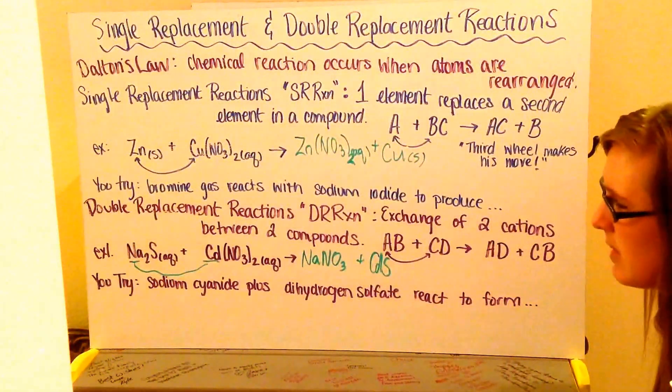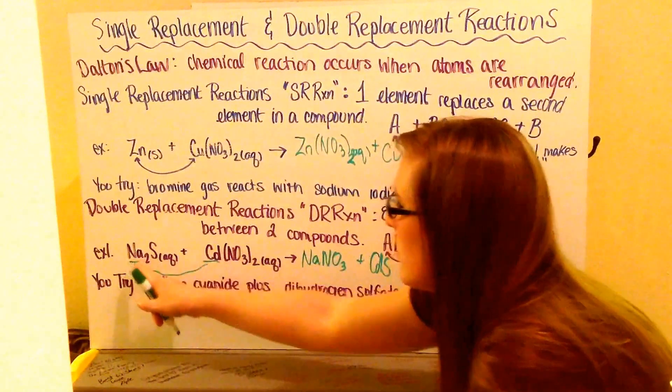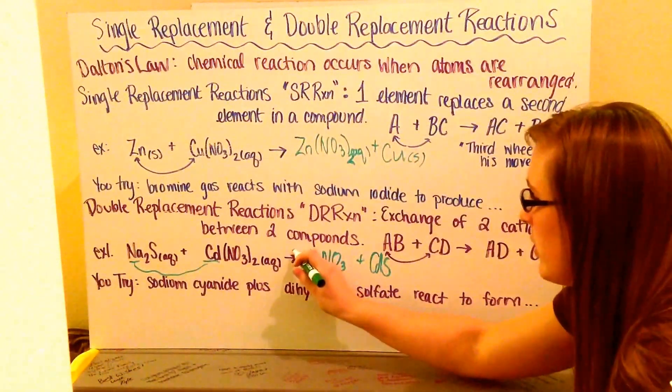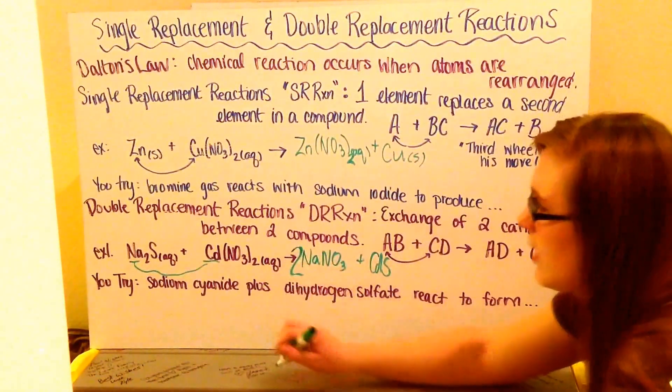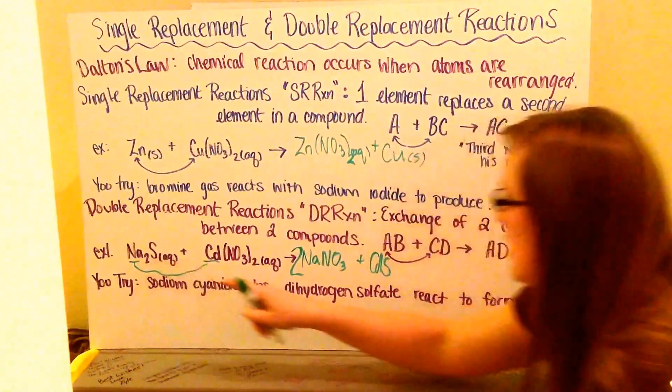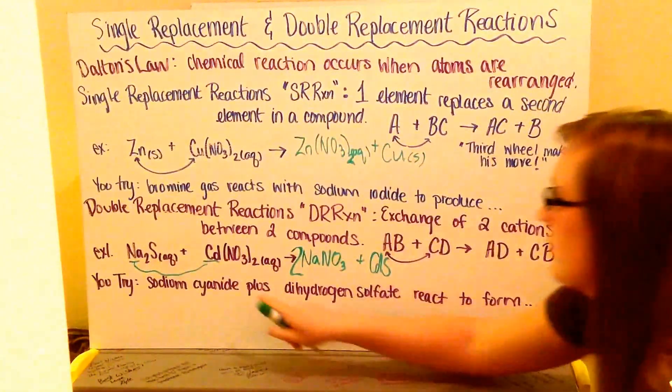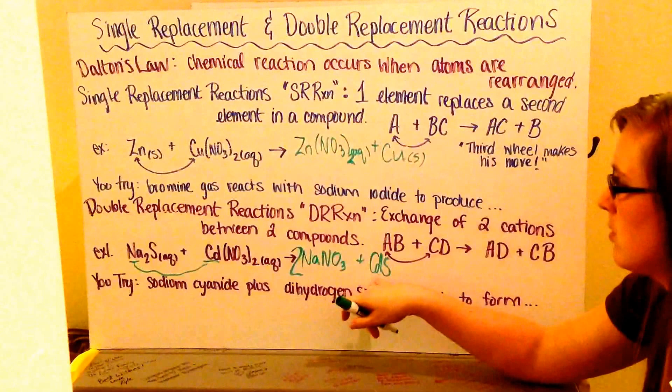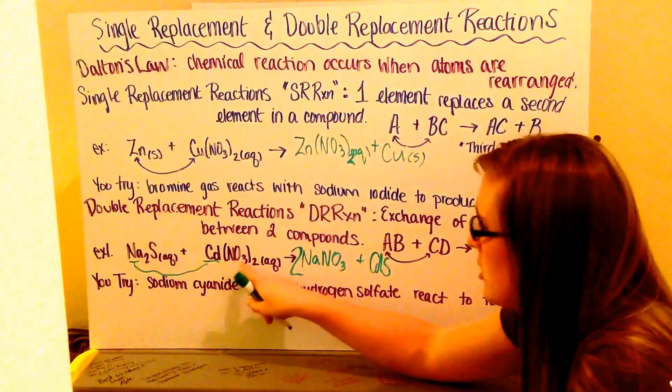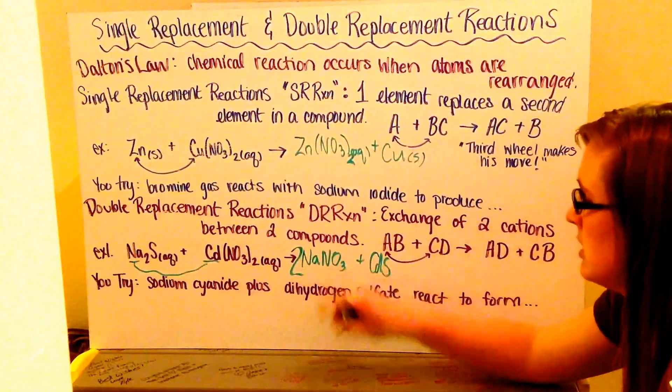Then, I go ahead and I balance my reaction. I have two sodiums here and one here, so I need to put a two in front. I have one sulfur here, one sulfur here, one cadmium here, one cadmium here, two nitrates here, and two nitrates here. So, therefore, I am now balanced.